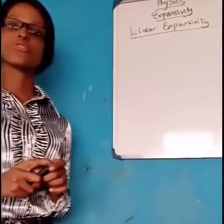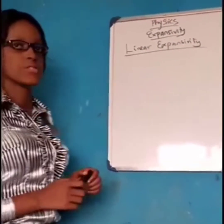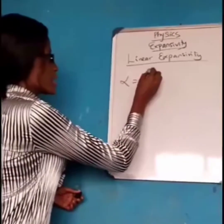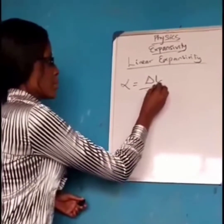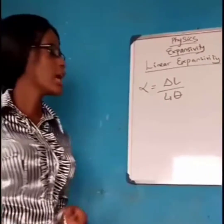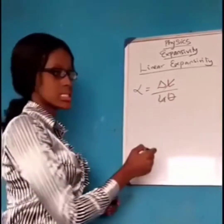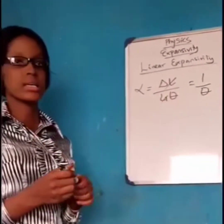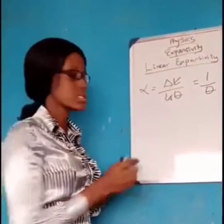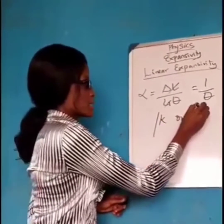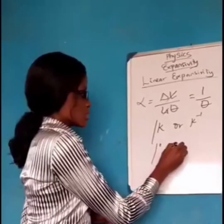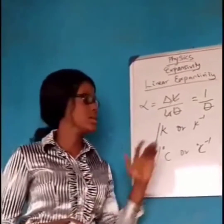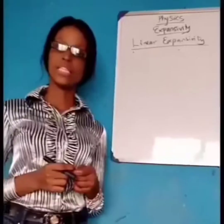A very important thing which you shouldn't forget in physics is your unit. The unit for linear expansivity can easily be gotten from the formula. Since linear expansivity equals increase in length per unit length per degree rise in temperature, for a unit of dimension, this length cancels out this length. Thus, we are left with just the temperature. Therefore, the unit for linear expansivity is per Kelvin, which you can also write as per degree Celsius.